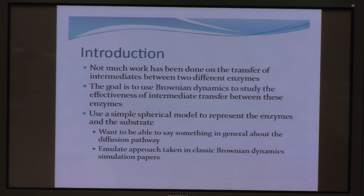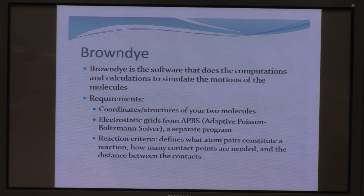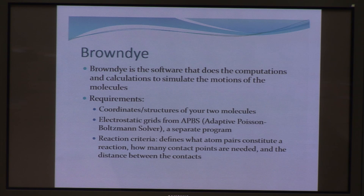I used Gary's BrownDye software to do the computations for my project. For BrownDye, you just need the structures of your two molecules — your target and your substrate — and then the electrostatic grids, which I generated using APBS. In BrownDye, you have to define the reaction criteria: what atom pairs constitute a reaction, how many contacts you need, and how far apart they need to be for a reaction.